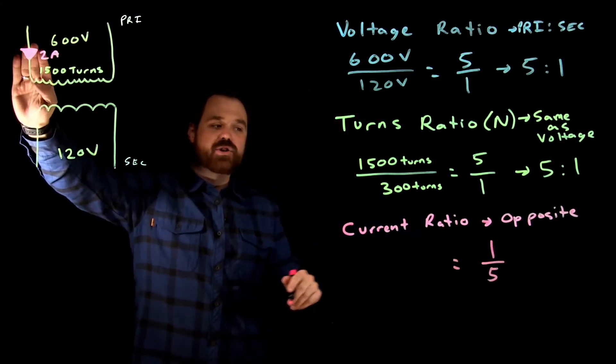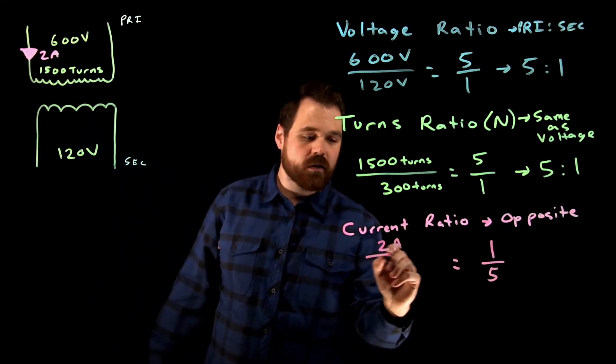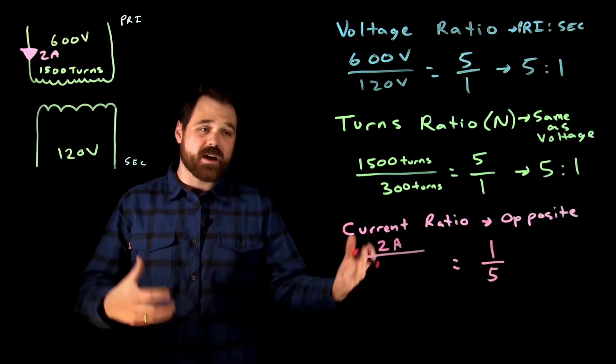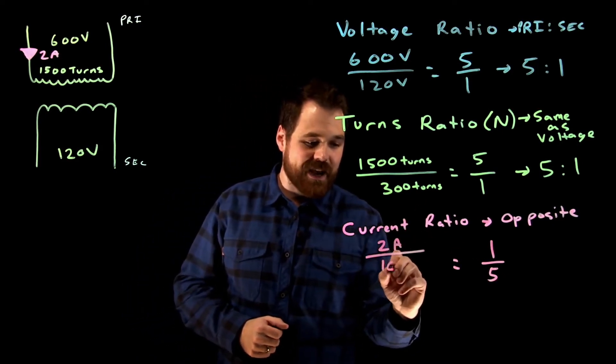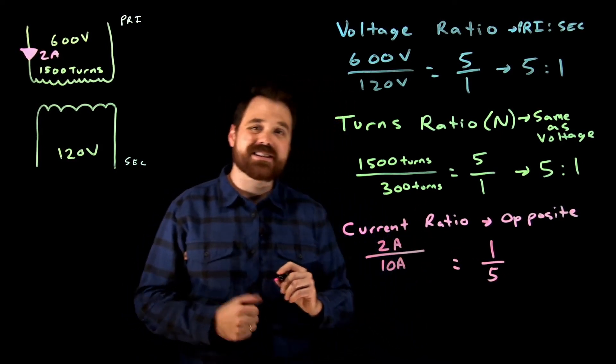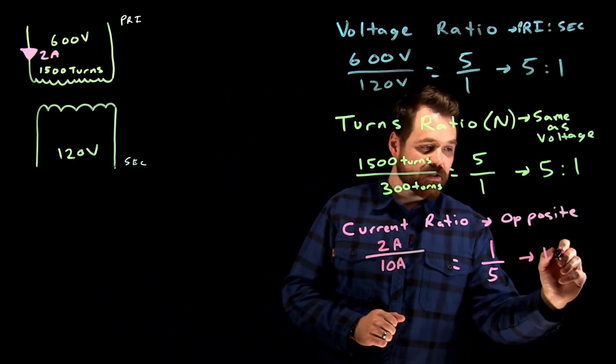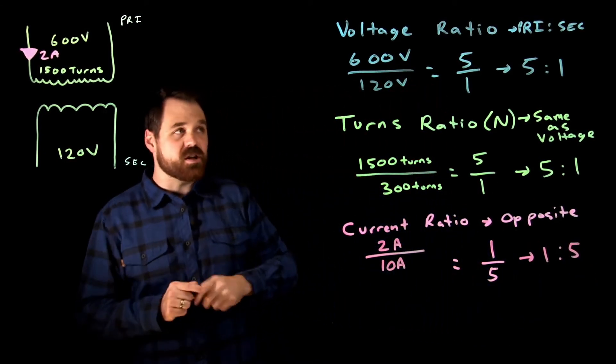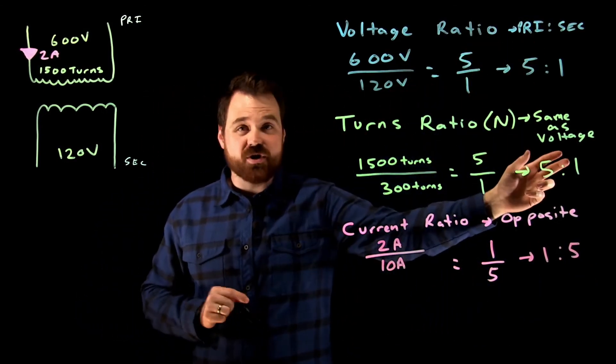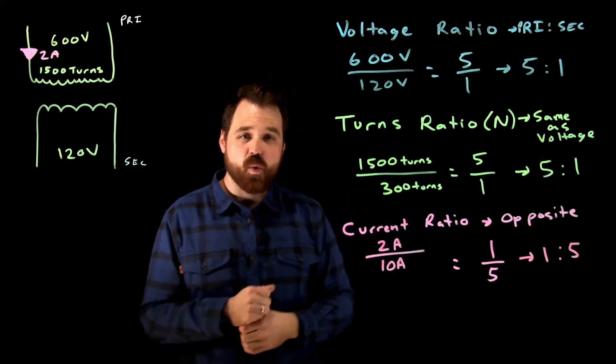So if we know we have two amps on the primary, we again would cross multiply, do a little transposing, two amps times five would give us 10 amps on the secondary. So in this case, we would have a one to five current ratio. So we can see voltage and turns are the same. The current is the opposite or the inverse of that. So it's a one to five.